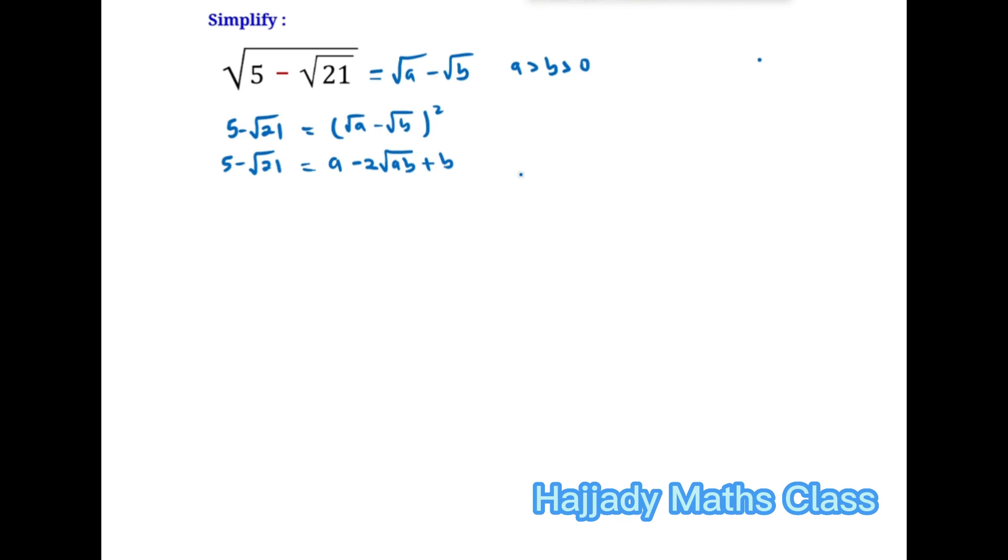So with this, I'm going to have 5 - √21 = A + B - 2√AB. Now taking the root in the root, it's going to be √4AB. Don't forget that the square root of 4 is the same thing as 2.